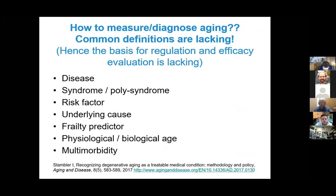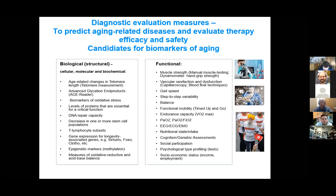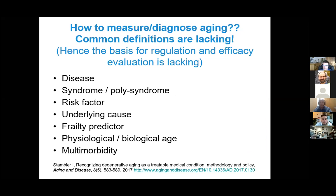There is even a question. Of course there are many imagined biomarkers — a multitude of them. Everything changes with age, so everything can be a biomarker. There is no consensus and no clear vision about what we're actually looking for. No consensus, no agreement even about the most basic definitions. How do we measure aging? How do we see aging? Is it a disease? Is it a syndrome, polysyndrome, risk factor, underlying cause, frailty predictor? Do we measure biological age, multimorbidity, or an index? What do we want to measure?